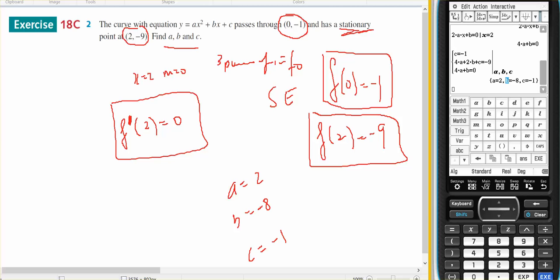Now just to show you something a little bit nice: in my simultaneous equations, I actually don't even need to express it in these terms. I can enter in my simultaneous equations as f(0) equals -1, f(2) equals -9, and d/dx of f(x) equals 0 given x equals 2, and solve that for a, b, and c to get the same answer.